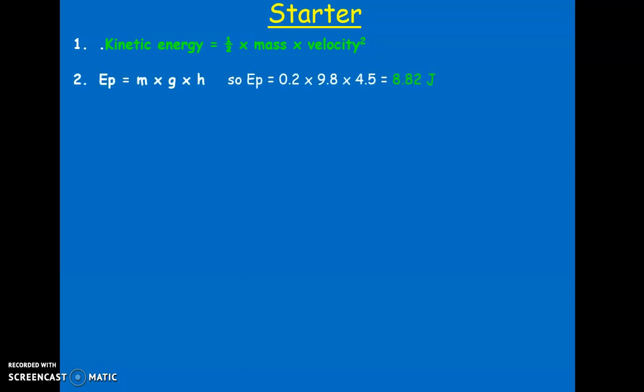Question two was a gravitational potential energy question. This equation was one that you have to remember from the energy topic — the kinetic energy one was also one you have to remember. They're not given to you, but they definitely will come up in your exam. Gravitational potential energy equals mass times gravitational field strength times height. You'll notice the mass is given as grams — 200 grams — but we need to convert that into kilograms, so 200 grams as kilograms is 0.2. Always remember that step.